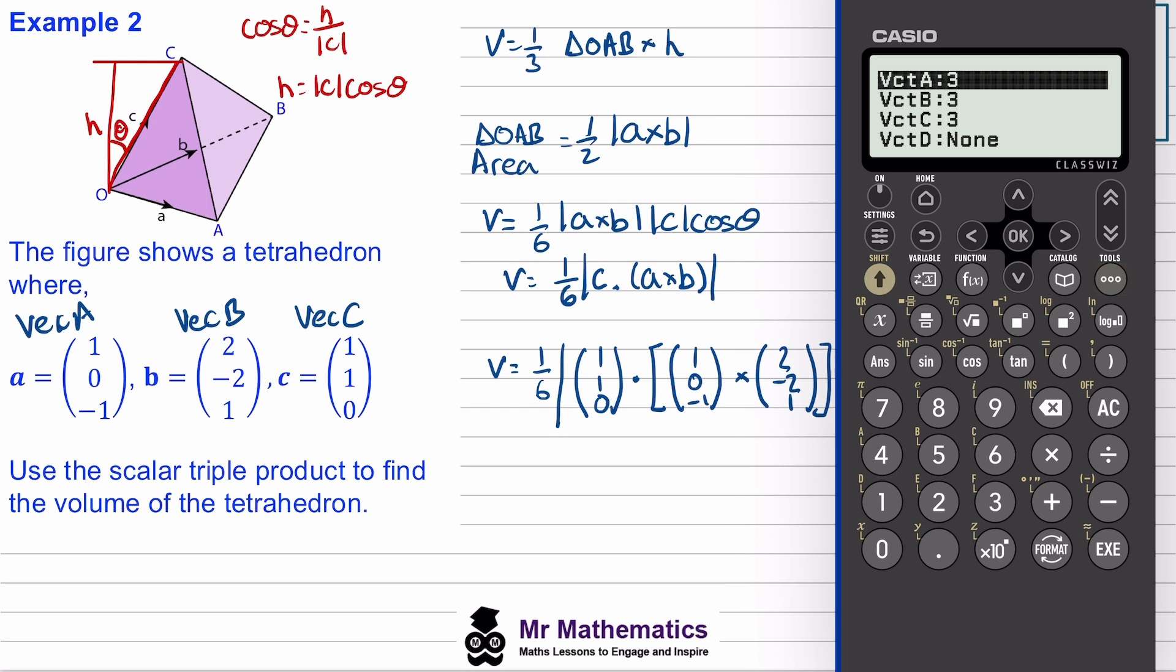We'll define vector B with the components two, negative two, and one. We'll execute that.